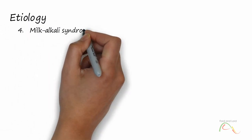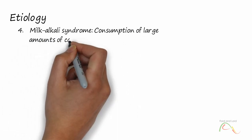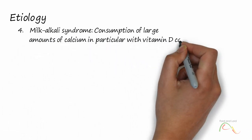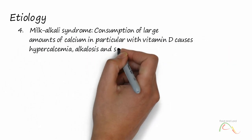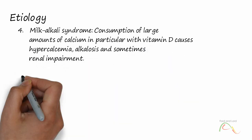Milk alkali syndrome: consumption of large amounts of calcium, in particular with vitamin D, causes hypercalciuria, alkalosis, and sometimes renal impairment.